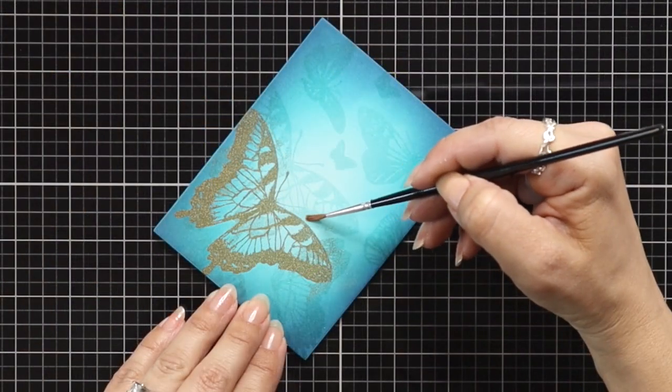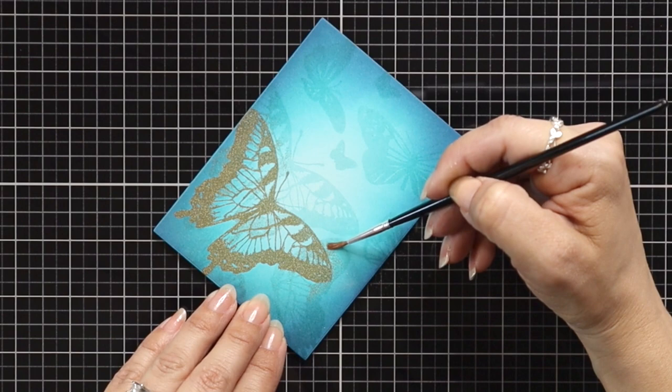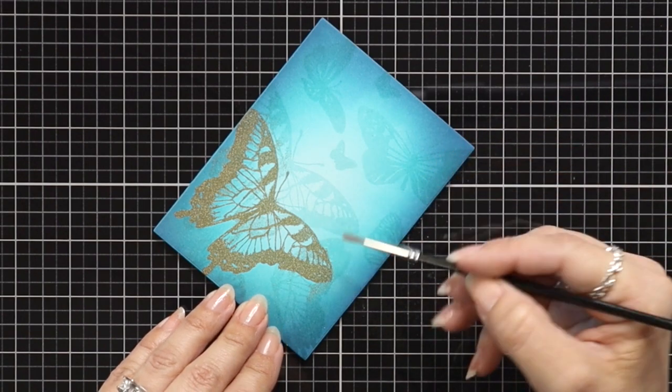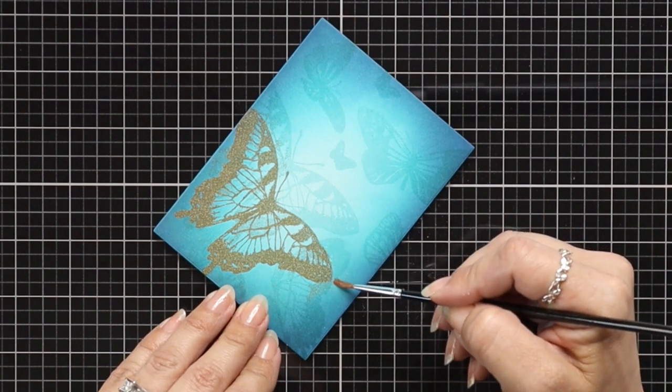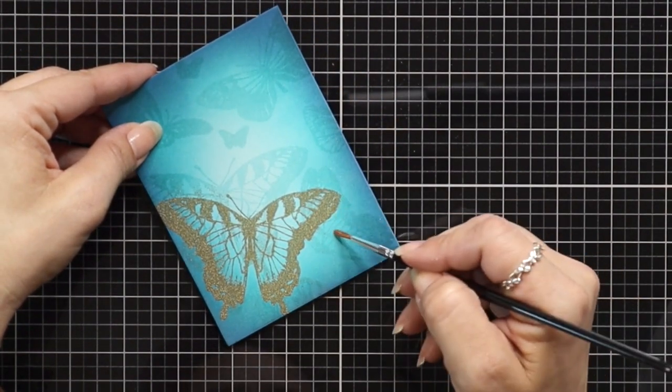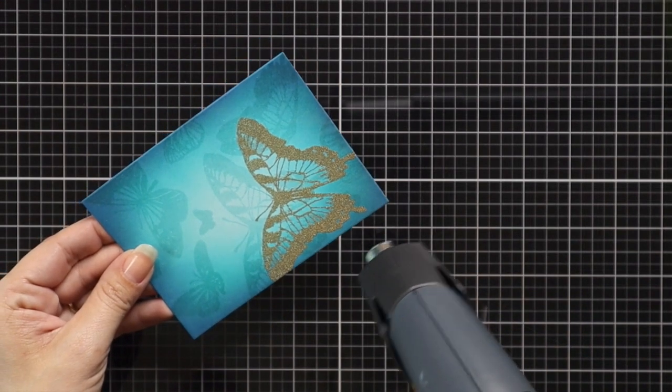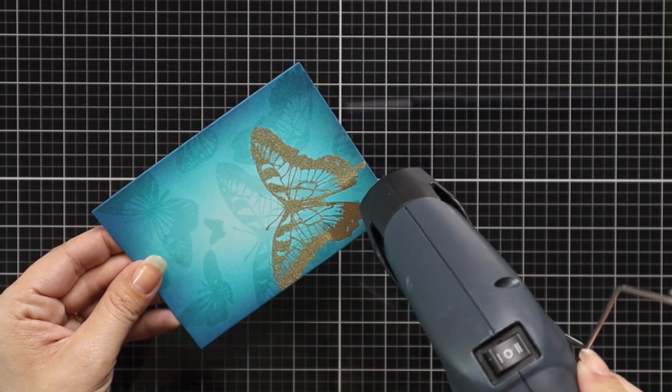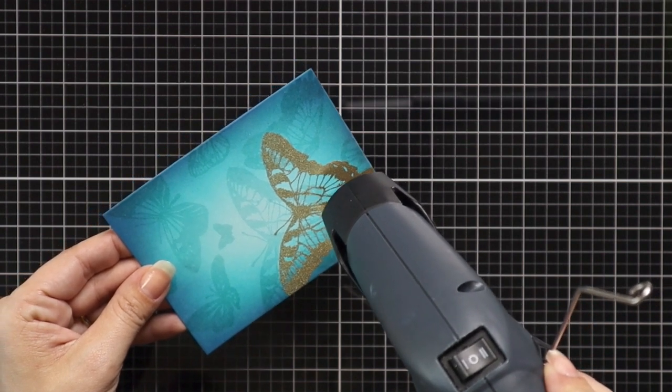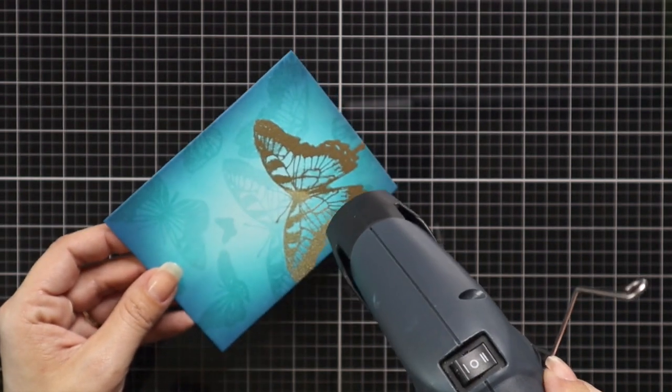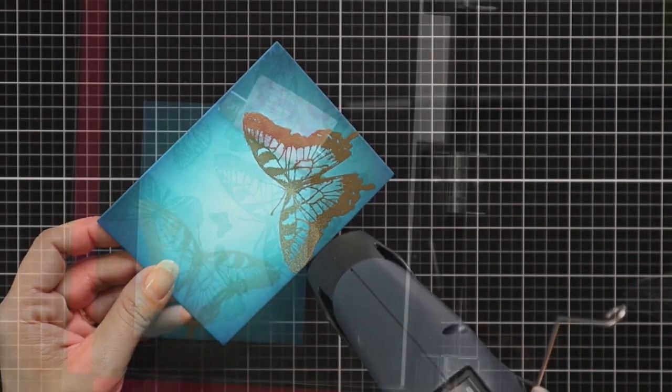After I tap off all of this excess there are going to be some areas where the gold embossing powder is sticking to my background. So I am taking a small paintbrush and just dusting off any of that excess powder and I believe I also dusted off one of the antennas so I'm going to have to re-stamp this which thankfully I left that butterfly in the same position in my MISTI tool so I'll be able to do that really easily. After my heat gun is nice and hot I'm going to melt the embossing powder and this is about where I realize that I'm missing an antenna.